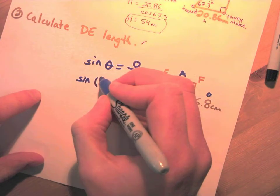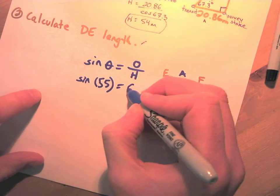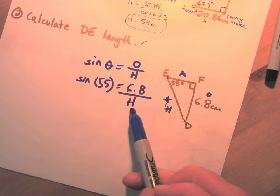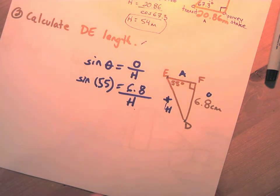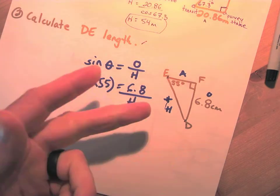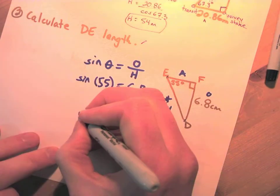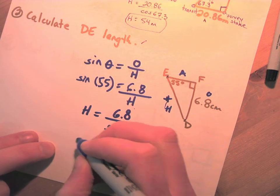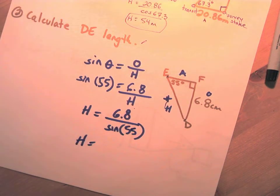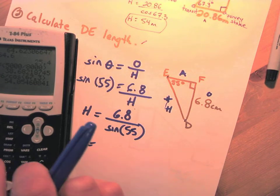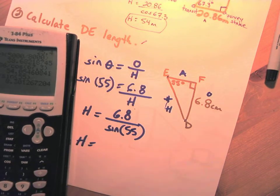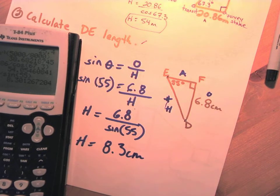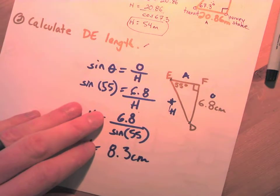Filling in: sin 55° = 6.8/H. We need to solve for H on the bottom — the quick way is to switch: H = 6.8 / sin 55°. Typing into the calculator: 6.8 ÷ sin 55° = 8.3 centimeters. That's how long line DE is: 8.3 centimeters.